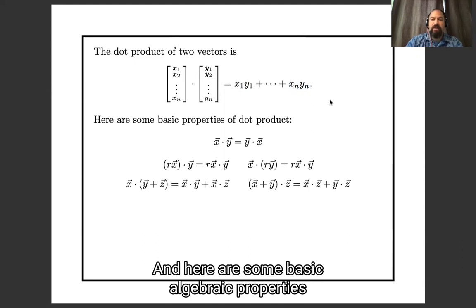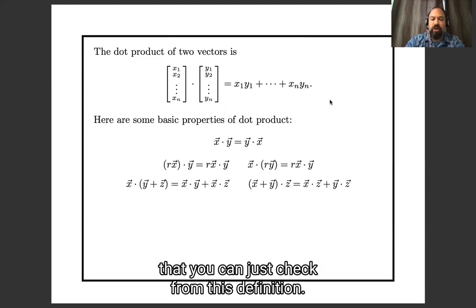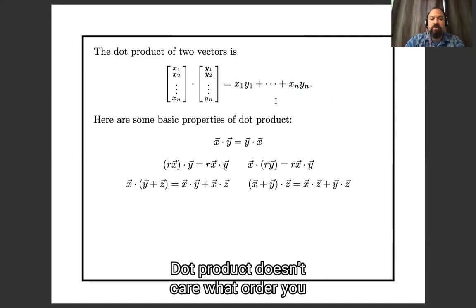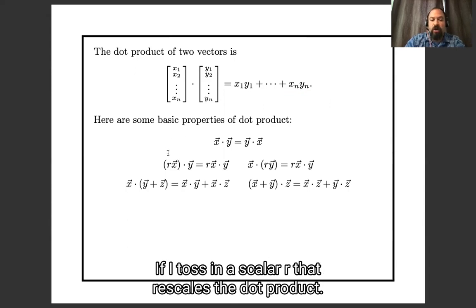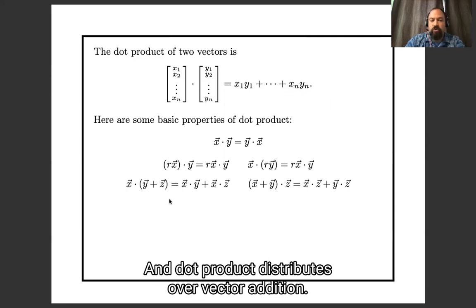And here are some basic algebraic properties that you can just check from this definition. Dot product doesn't care what order you multiply in, x dot y is the same as y dot x. If I toss in a scalar r, that rescales the dot product, and dot product distributes over vector addition.